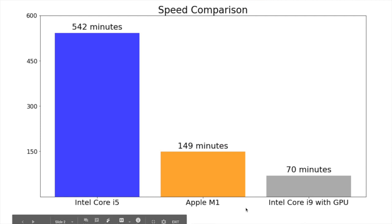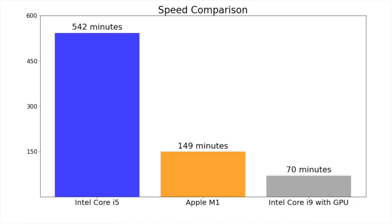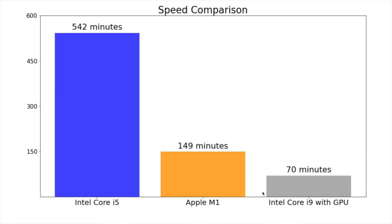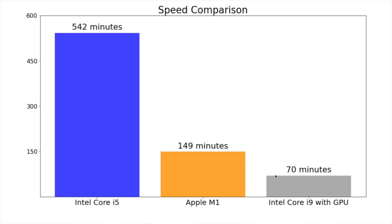That isn't the only comparison we did. We also checked the Apple M1 chip against an Intel Core i9 with Radeon Pro GPU. The Intel Core i9 with GPU outperformed both the Intel Core i5 and the Apple M1. On the same exact task — fitting 121,000 COCO images with YOLO V2 for 5,000 epochs — the Intel Core i9 with Radeon Pro GPU only took 70 minutes, making it about twice as fast as the M1 and around six times as fast as the Intel Core i5.